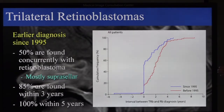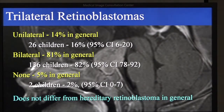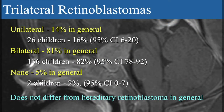If you want to screen, you have essentially zero risk after five years — that's good to know. Is trilateral retinoblastoma different from the usual hereditary form? It's not. According to literature, unilateral disease occurs in approximately 14% of cases. Unilateral retinoblastoma with a trilateral tumour occurs in 16%. Bilateral in 81% of cases, and bilateral with trilateral in 82%. No tumour in the eye and only pineal — these are the asymptomatic carriers — and 2% with trilateral tumour only. So there is no difference in the phenotype of the eyes.